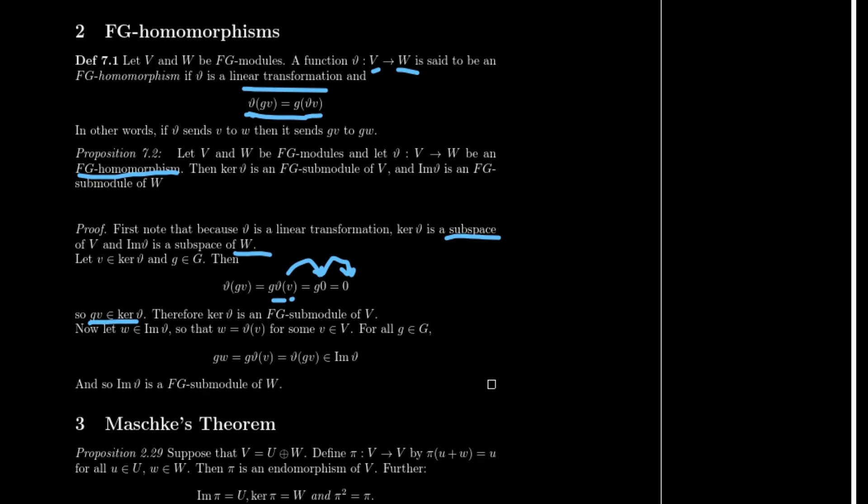So let W be in the image of θ. This means that there is a V such that θ V is going to be W. So what we have then is that GW simply is Gθ of V. Returning back to the major property that we defined in the FG homomorphism, this means it's just θ GV, which again is the image of θ. So the image of θ is also a FG submodule of W.